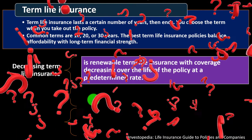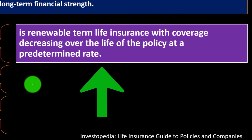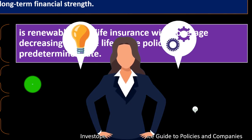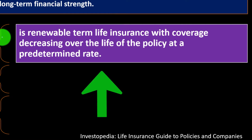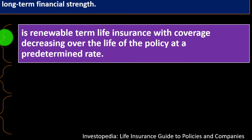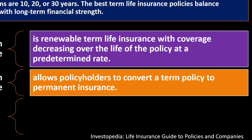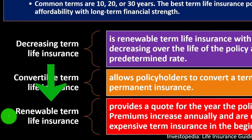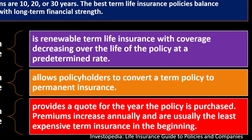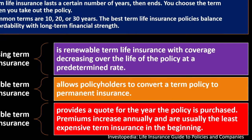What types of term do we have? Decreasing term life insurance is renewable term life insurance with coverage decreasing over the life of the policy at a predetermined rate. Convertible term life insurance allows policyholders to convert a term policy to permanent insurance — that being the conversion component. Renewable term life insurance provides a quote for the year the policy is purchased; premiums increase annually and are usually the least expensive term insurance in the beginning.